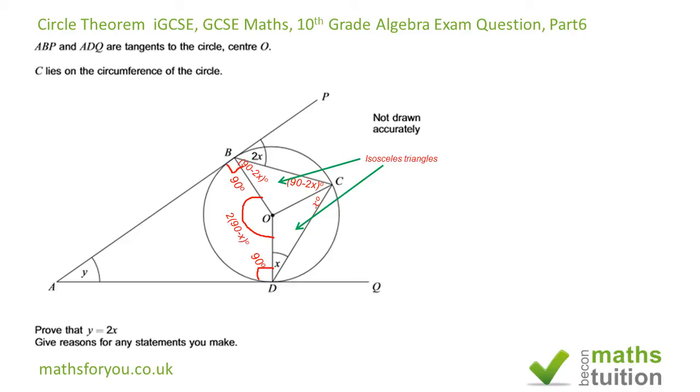I'm going to try and do this the hard way, and you can do the simpler way. I'm going to consider the quadrilateral ABCD. Angle A is y degrees, angle B is going to be 90 plus 90 minus 2x, which gives us 180 minus 2x.